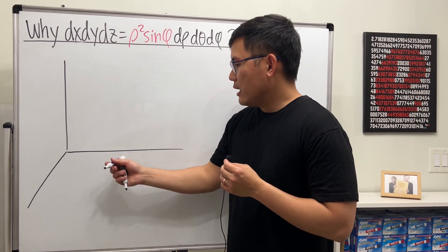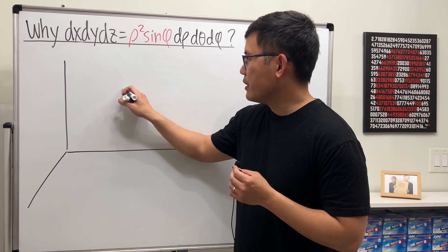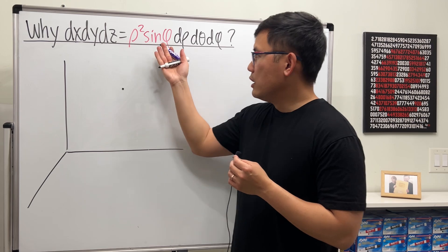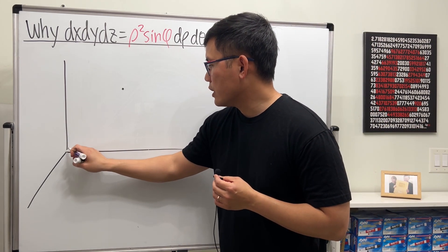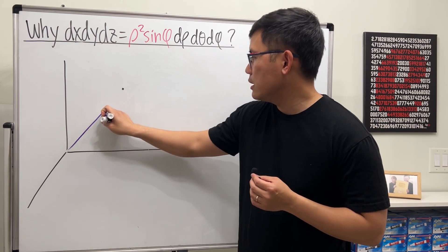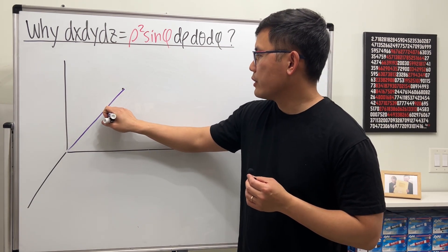Let's say we have a point somewhere here. In the spherical coordinate system, we have to know the distance from the origin to the point, and we're going to call that rho.